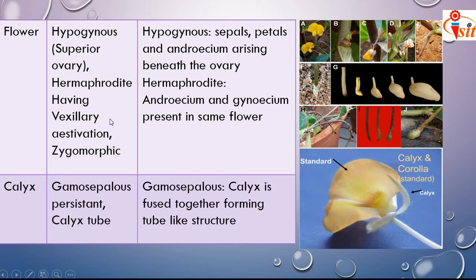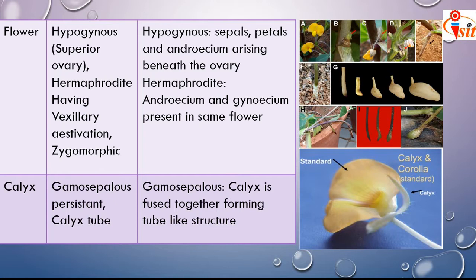Vexillary aestivation is present and the flower is zygomorphic. A zygomorphic flower is one that can be cut along a vertical axis to give a mirror image.